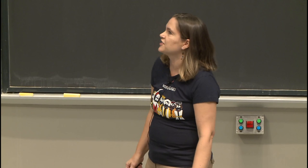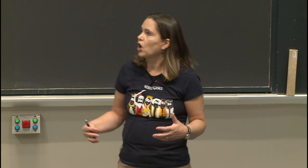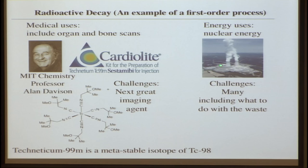Radioactive decay has a lot of applications, including medical applications such as imaging organs and bones, including the heart. There is a compound you already saw called cardiolite, which we talked about in transition metals, because it contains a transition metal.